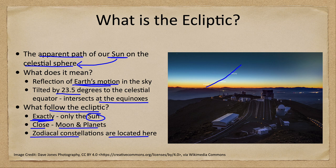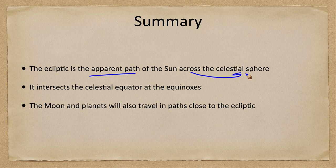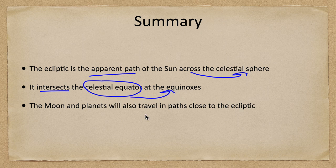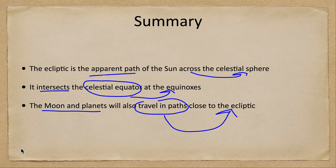And what we've looked at this time is the ecliptic, and we defined it as the apparent path of the Sun across the celestial sphere. It intersects the celestial equator at two points, and those are the equinoxes—the first day of spring and the first day of fall. And we also saw that the Moon and planets will also travel in paths that happen to be close to the ecliptic.